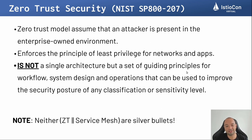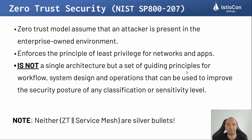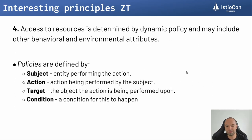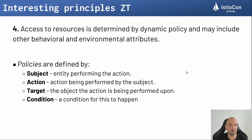Neither zero trust nor the service mesh are silver bullets — let's be very clear here. When we talk about zero trust security, we're not talking about a final architecture or a final hard design for your system, but rather a few principles that combined can bring you a more reliable architecture. From the principles detailed in the NIST document, the fourth principle is very interesting: access to resources is determined by dynamic policies and may include other behavioral and environment attributes — meaning we can define dynamic policies for your cluster or system, including behavior and attributes for the environment.